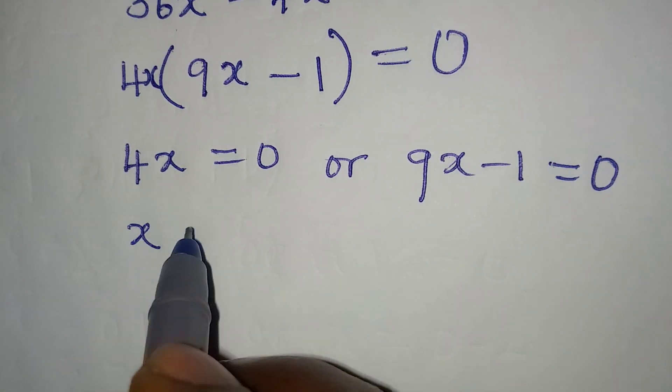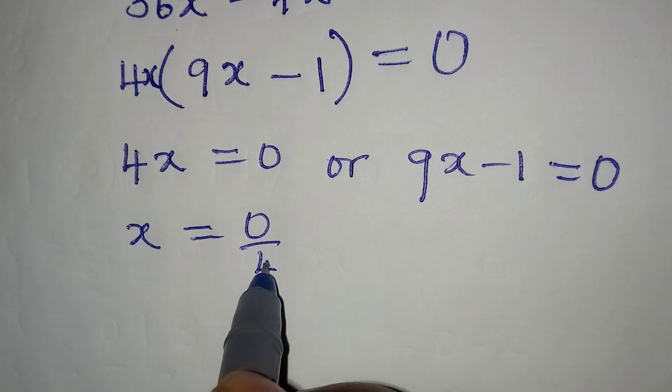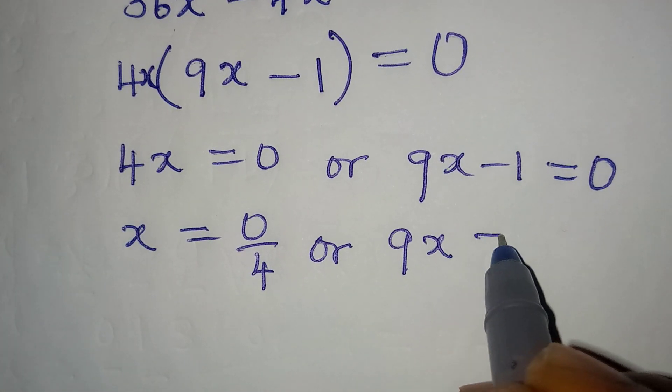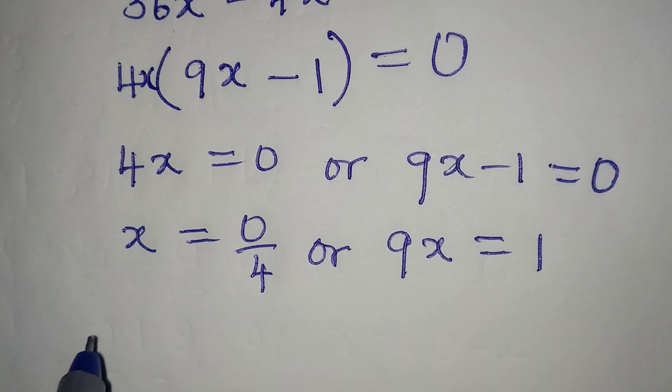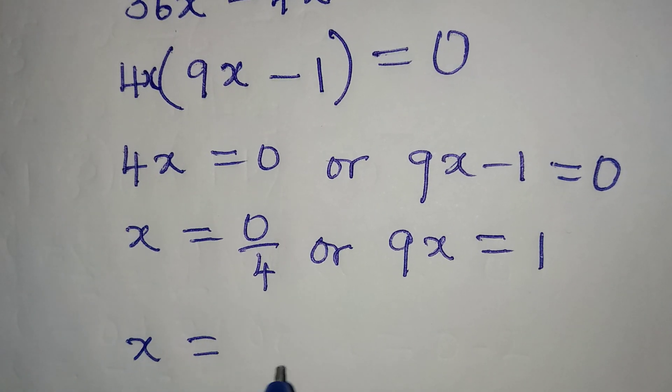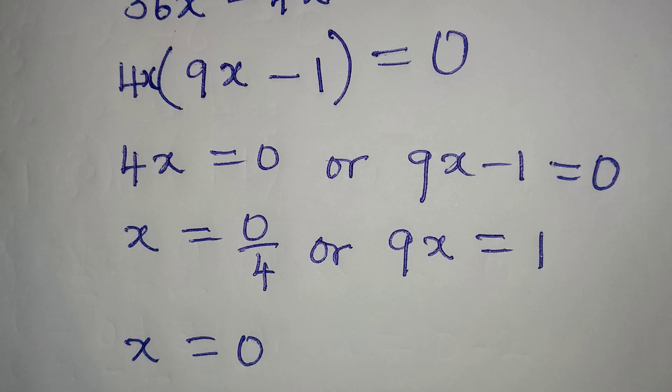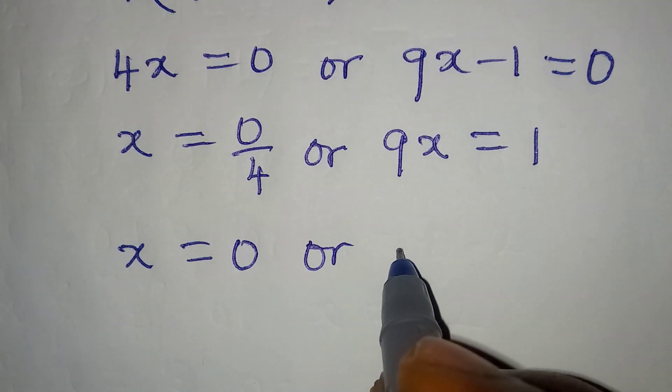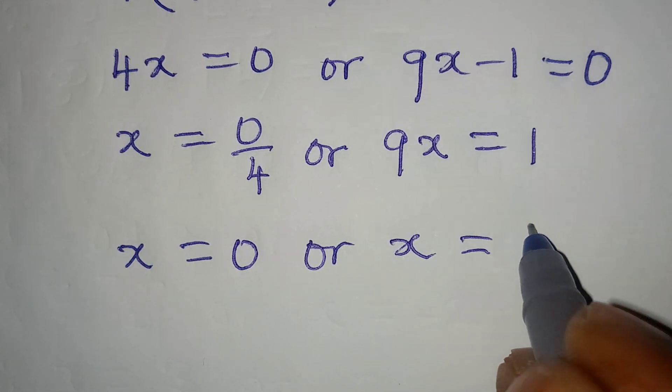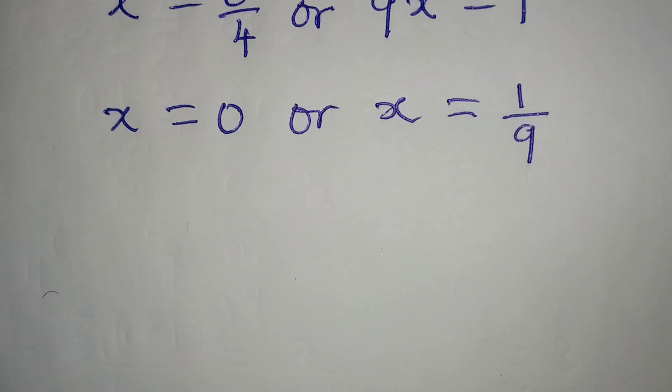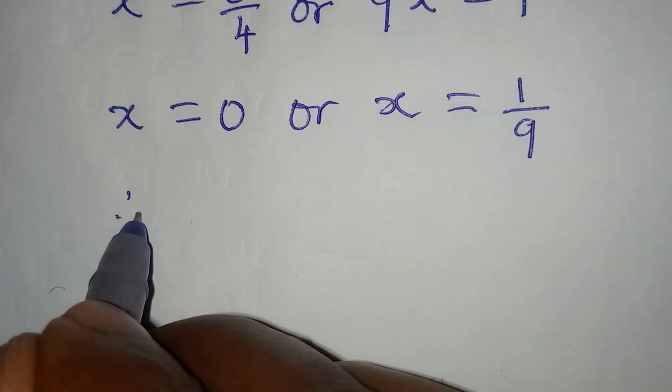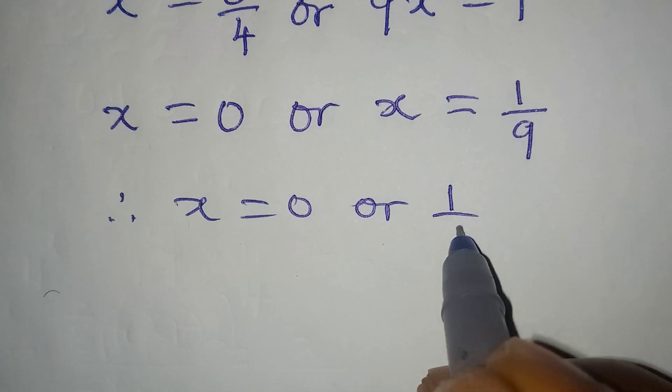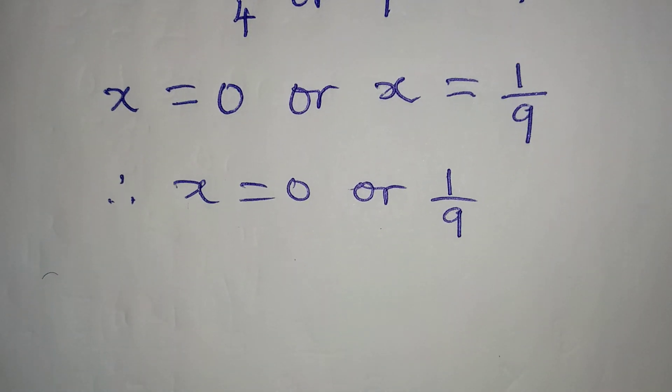From here, x will be 0 over 4, or on this side 9x = 1. X from here is equal to 0 because 0 divided by 4 is 0, or on this side x = 1/9. So we can conclude that x = 0 or x = 1/9.